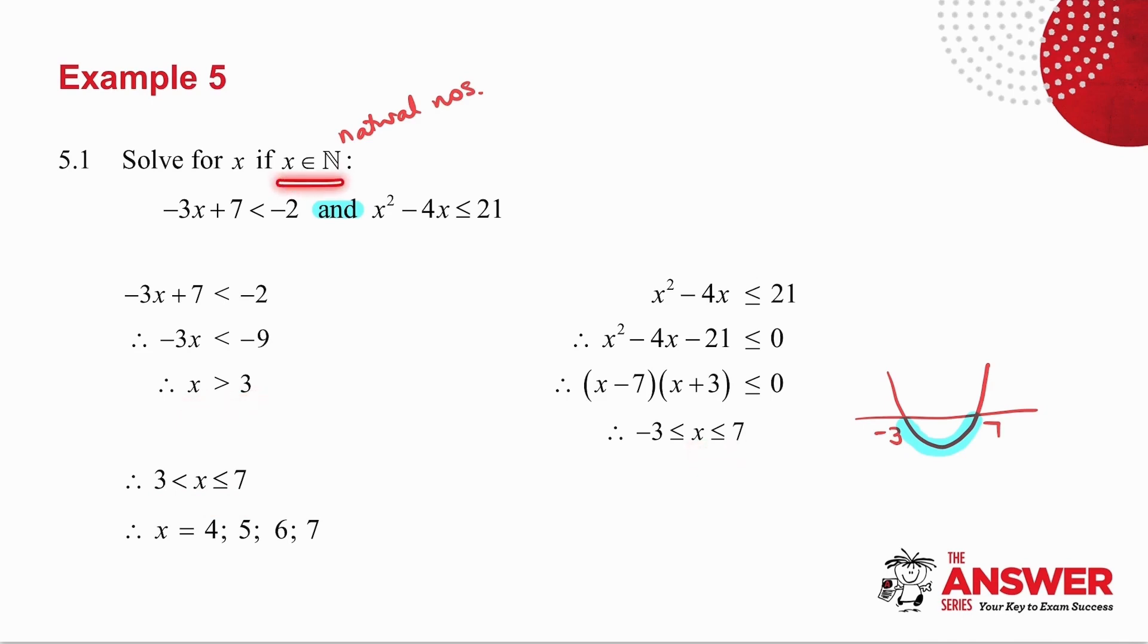But remember that X has to be a natural number. So what natural numbers are greater than 3 less than or equal to 7? X can be 4, 5, 6, or 7.